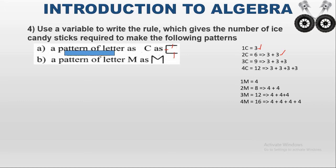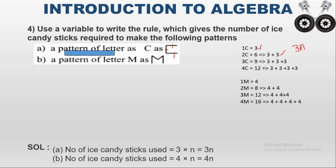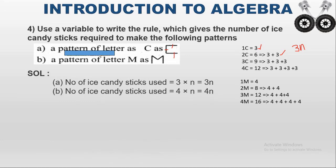That repeated addition is nothing but multiplication. Using that, the general term can be written as the repeated addition of 3. Taking the variable as n, the general term can be written as 3n.